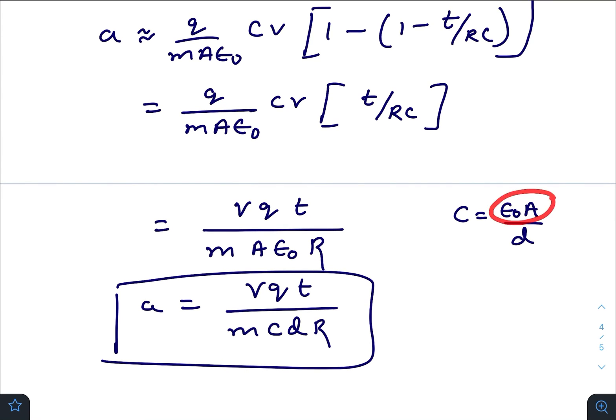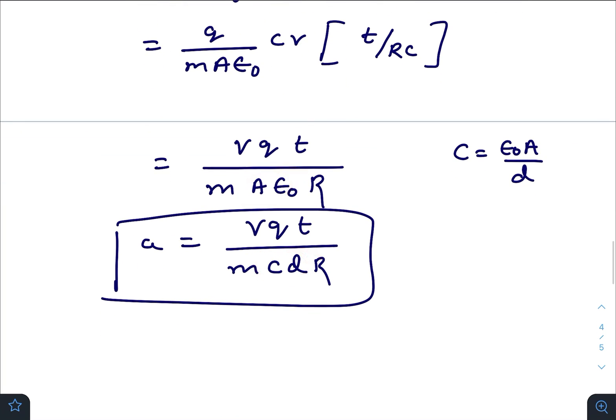Replacing epsilon not A with C times D, the final answer we get for the acceleration of the particle is a = V q t / (m c d R).